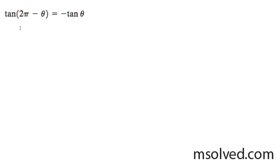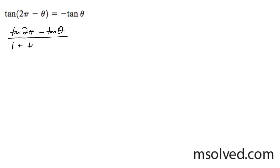Let's prove the identity on the left is equal to the right. What we're going to do here is start off — this can be written as tangent of 2π minus tangent of theta over 1 plus tangent of 2π times tangent theta.